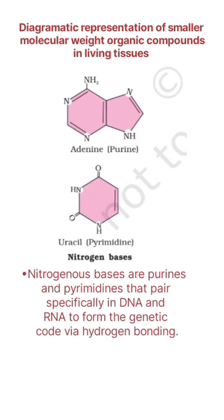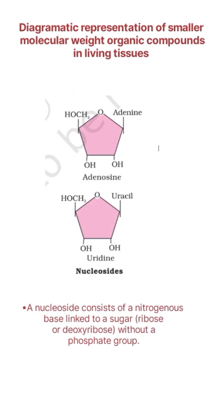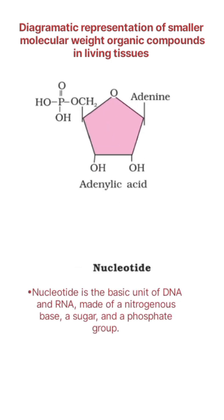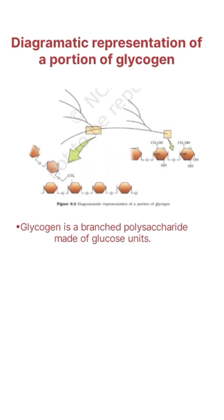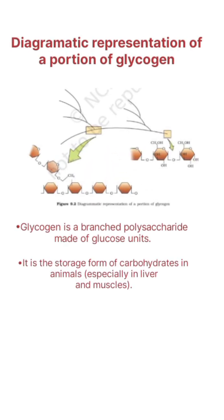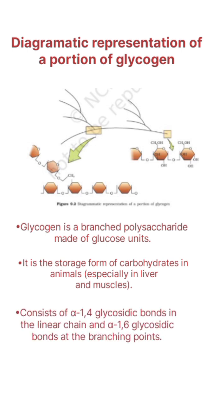Next step: nitrogen bases. Next step: nucleosides. Next step: nucleotides. Nucleotides such as ATP are stored in animals and help in energy supply in the liver and muscles.